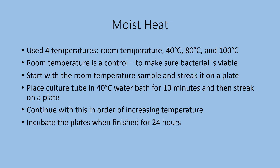In the moist heat experiment, you use four different temperatures: room temperature, 40, 80, and 100 degrees C. Remember, 100 degrees C is boiling. Room temperature is used as a control — you want to make sure your culture was viable and living to begin with, so you can see what the normal growth pattern is like. You streak it on a plate, then take that same tube in a broth culture and put it into a 40-degree water bath for 10 minutes. You use the same tube because you just tested it at room temperature to know that it was living; if you used a different tube, you'd be adding another variable.